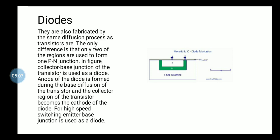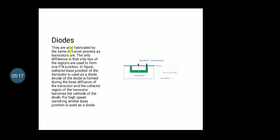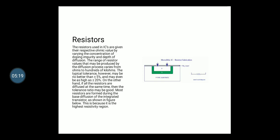Anode of the diode is formed during the base diffusion of the transistor and the collector region of the transistor becomes the cathode of the diode. For high speed switching, emitter base junction is used as a diode.